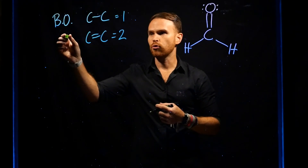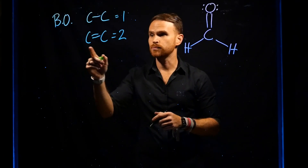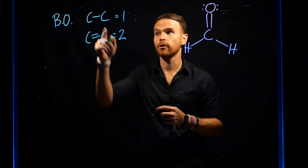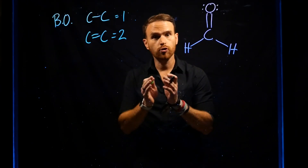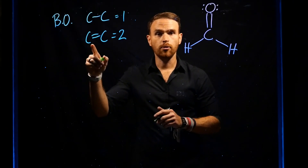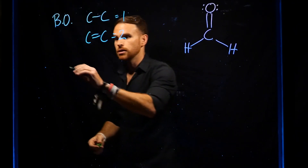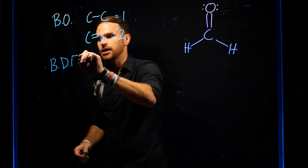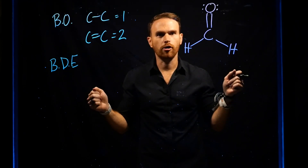Importantly, bond order can help you determine which will produce a shorter distance between the two nuclei of atoms connected via covalent bonds. A bond order of two is going to be shorter than a bond order of one, meaning the C=C double bond is shorter than a C–C single bond. Similarly, we can determine bond dissociation energy — the amount of energy required to break apart two atoms.